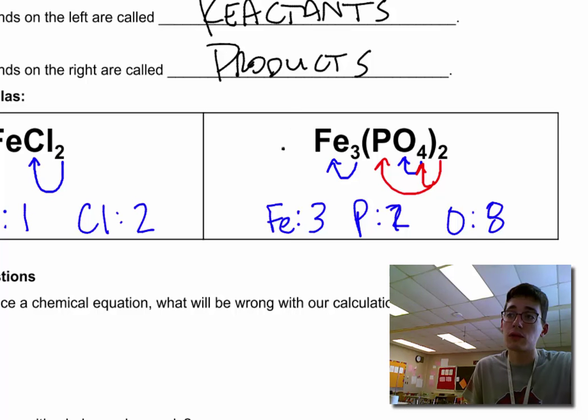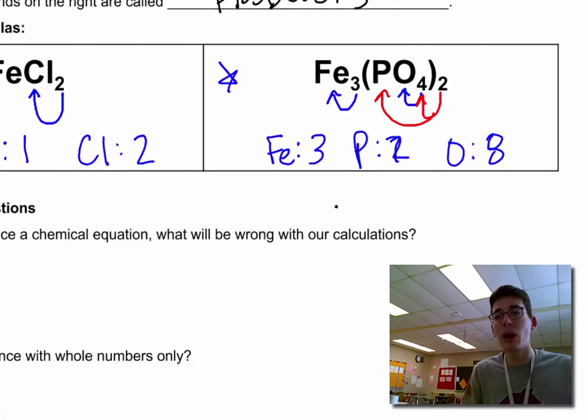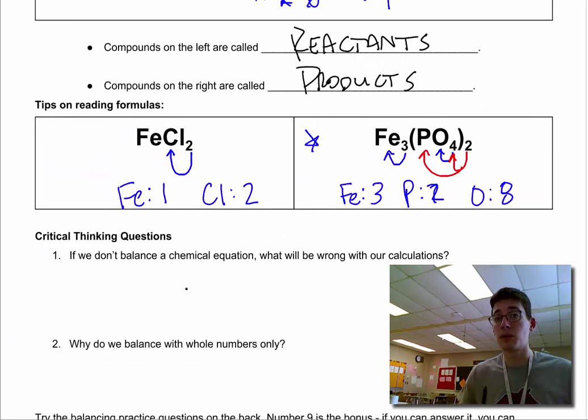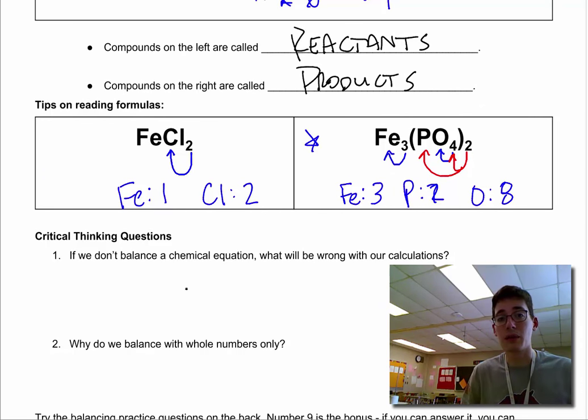Make sure you know how to count your atoms, because if you can't count your atoms, you can't balance your equations. A couple of critical thinking questions here on the bottom, talking about balancing what's going to be wrong. Why do we balance with whole numbers? What does that mean? And if you're in class with me, you've got a backside of this paper. Check out. There's a whole list there you can balance. If you're not, you can grab a copy of the handout on the website. BennettScience.co. Thanks for watching. Leave comments if you have questions.